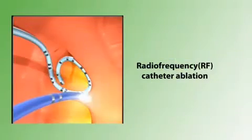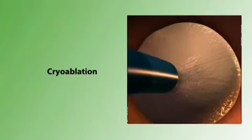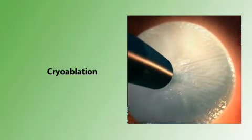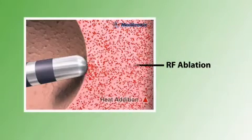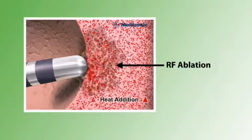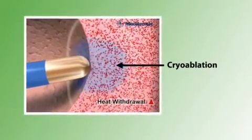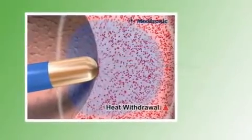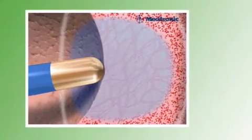There are two main techniques used to perform pulmonary vein isolation: radiofrequency RF ablation and cryoablation. One of the main differences between these techniques is the energy source used during the procedure. In RF ablation, heat is applied to the tissue, whereas in cryoablation, heat is removed from the tissue by introducing cold temperatures. Both types of ablation result in the formation of scar tissue around the pulmonary veins.